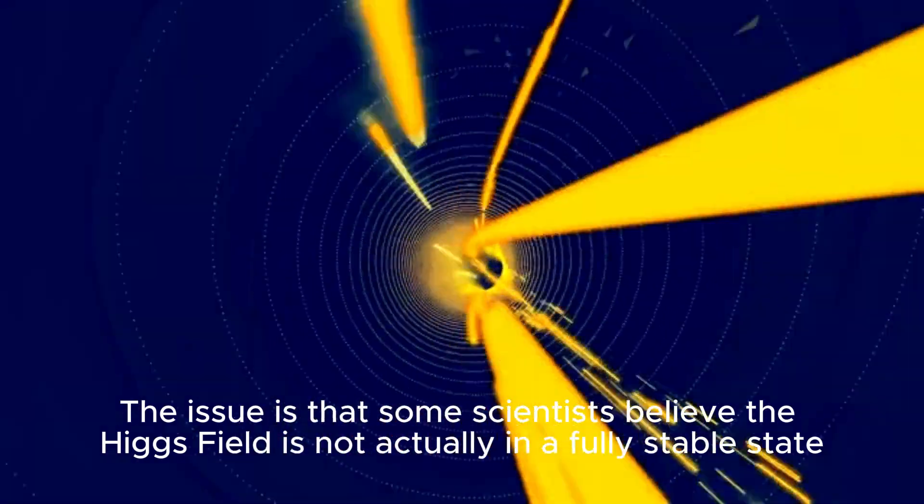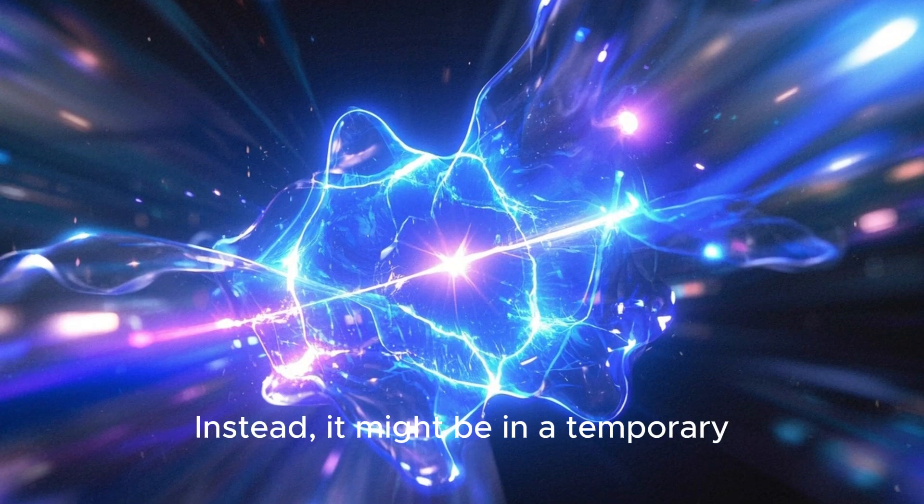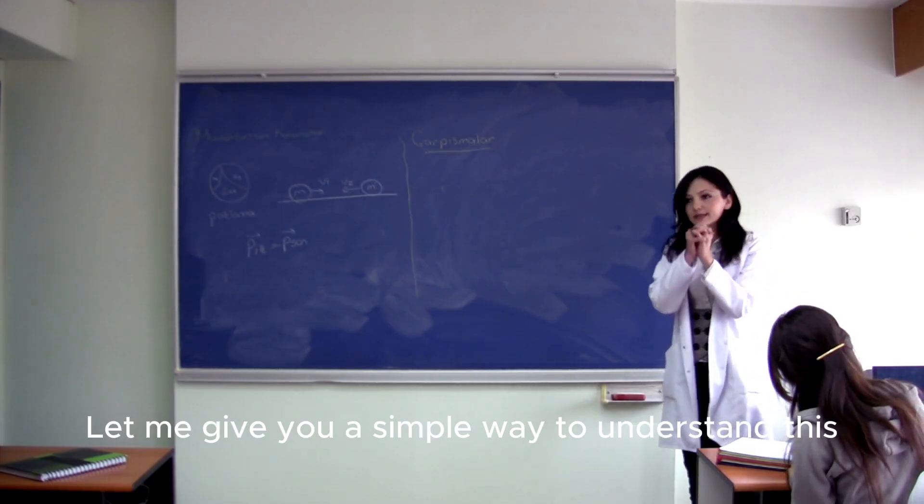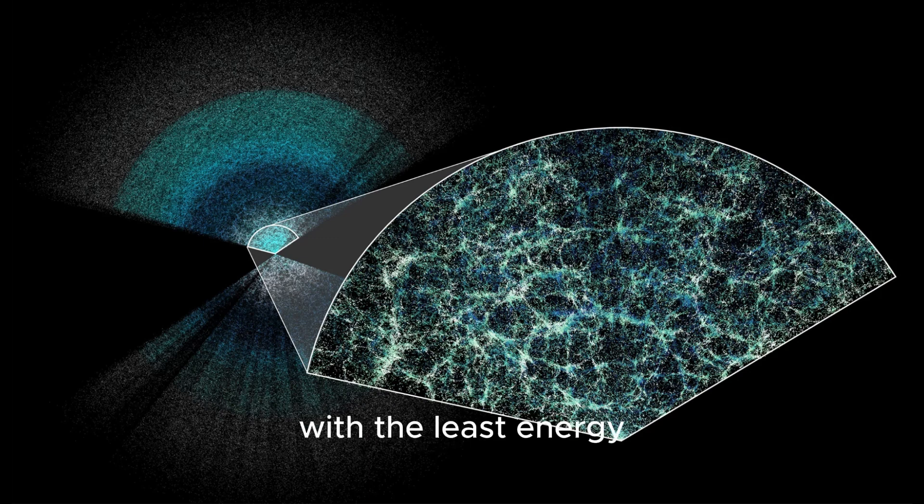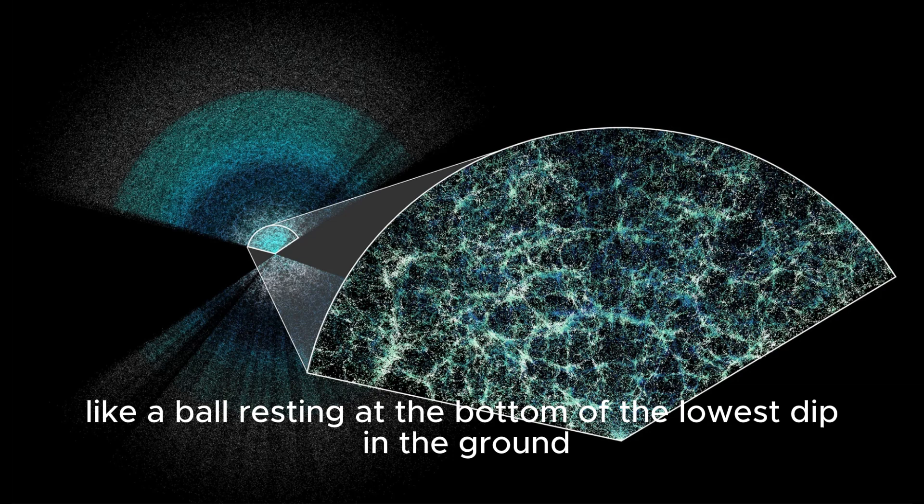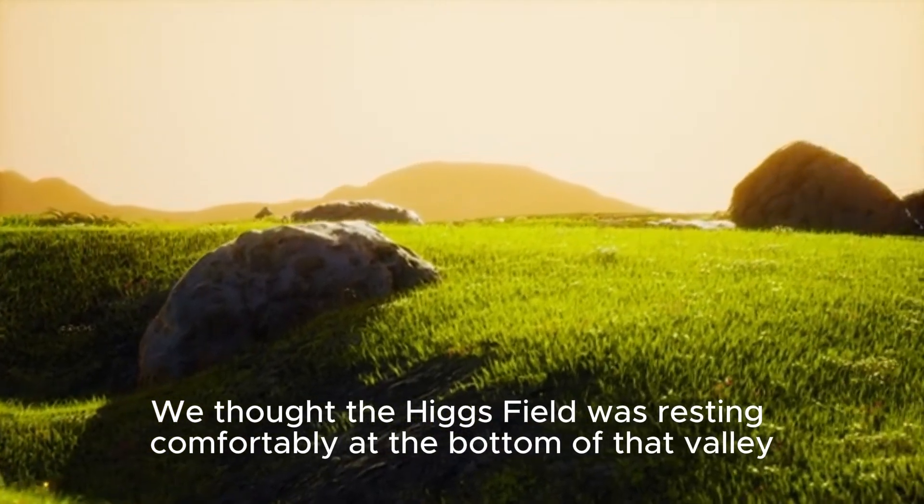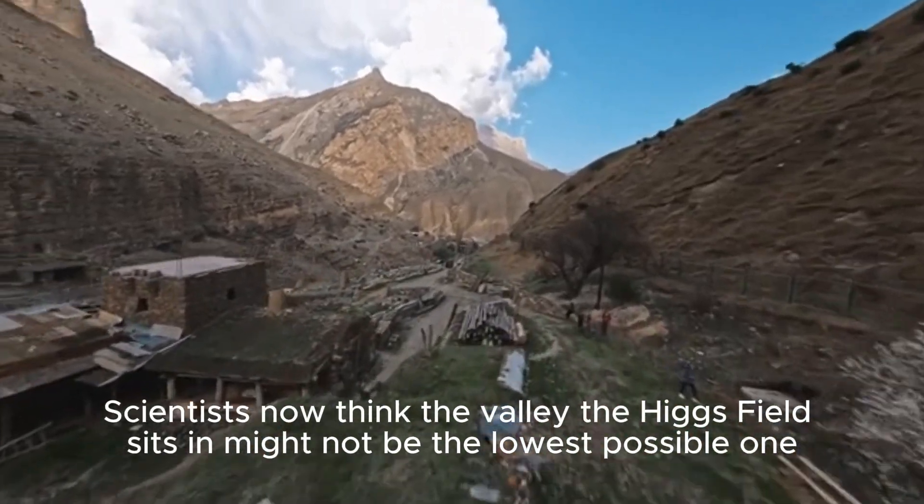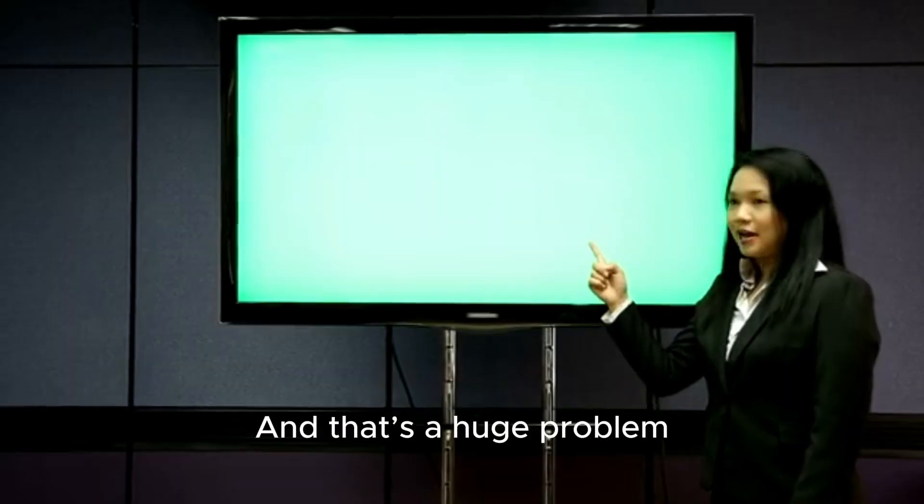The issue is that some scientists believe the Higgs field is not actually in a fully stable state. Instead, it might be in a temporary unstable state called a false vacuum. Let me give you a simple way to understand this. Imagine the vacuum of space as a valley - the most stable place with the least energy, like a ball resting at the bottom of the lowest dip in the ground. We thought the Higgs field was resting comfortably at the bottom of that valley, stable and at peace. But here's the shocking part - scientists now think the valley the Higgs field sits in might not be the lowest possible one. And that's a huge problem.